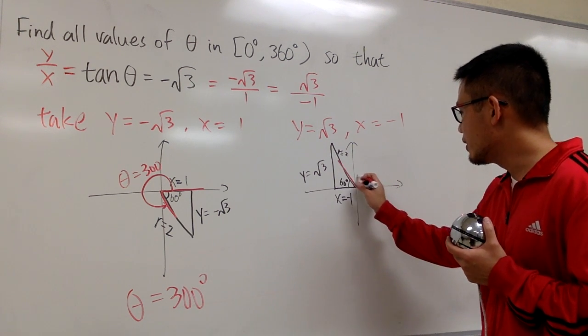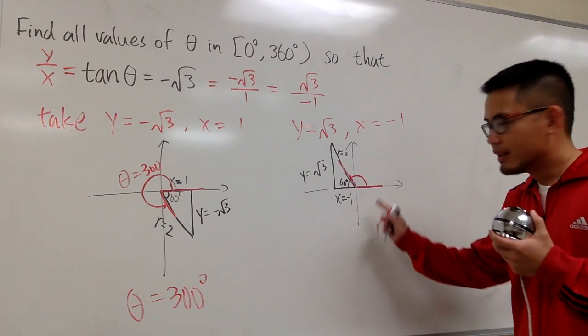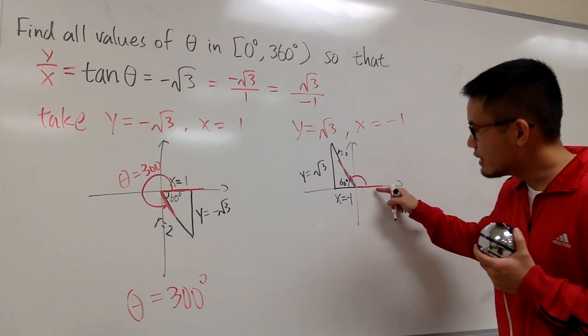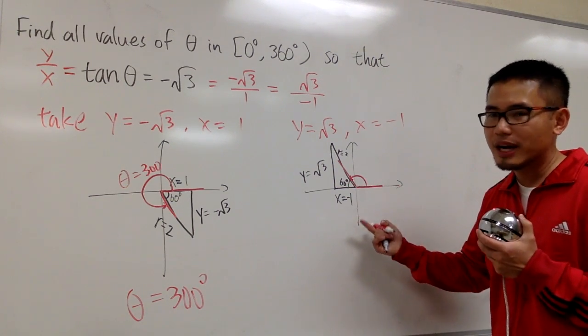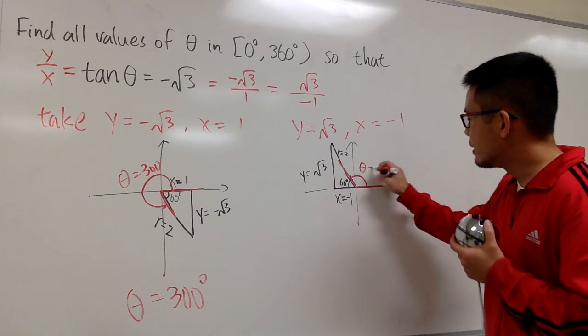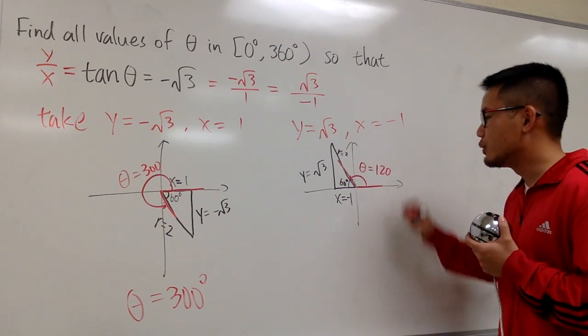This time, the whole thing for a straight line would be 180. But this is 60 already. That means the angle here has to be 120 degrees.